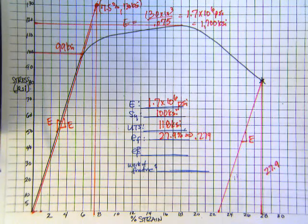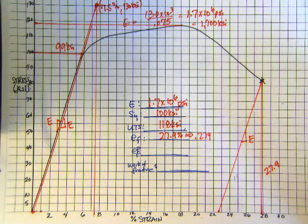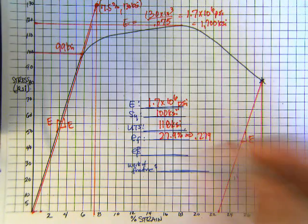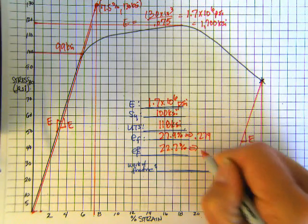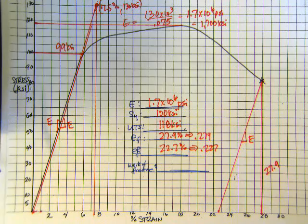And what we should get is that this slope, this line, should be the same as the slope of the offset line, which is also the same as the slope of the initial linear portion. Those all should be the same slopes. And so that tells us we've got about 22.7, 22.6 or so.